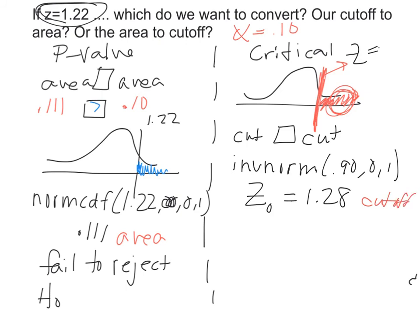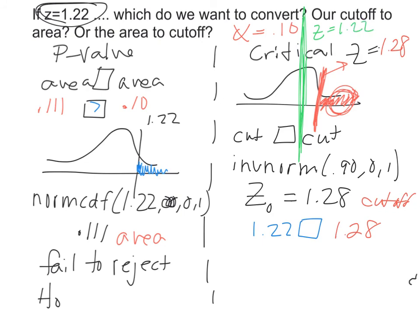Now we compare cutoff to cutoff: our value is 1.22 versus the critical value of 1.28. Since this is a right-tailed test, 1.22 falls just to the left of 1.28 — it's not inside the rejection region. Because our z-score is not in the rejection region, we fail to reject H₀. We get the same answer as the p-value test; the only difference is what we used to compare the two values.